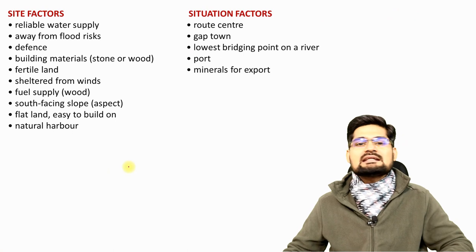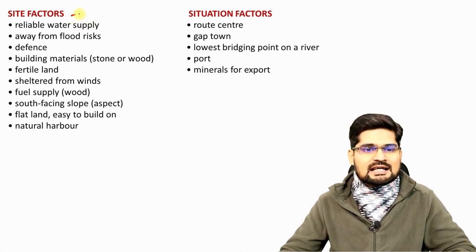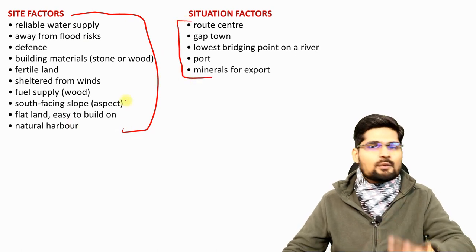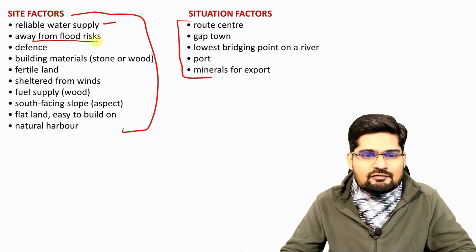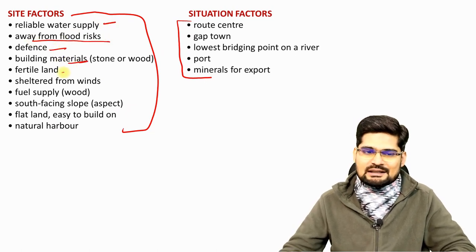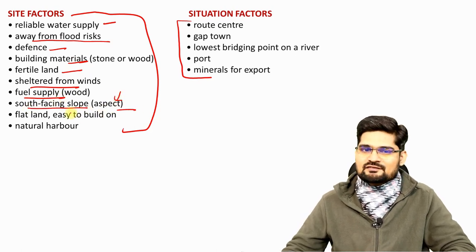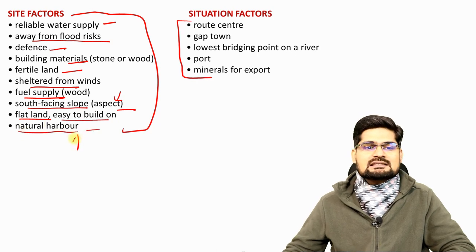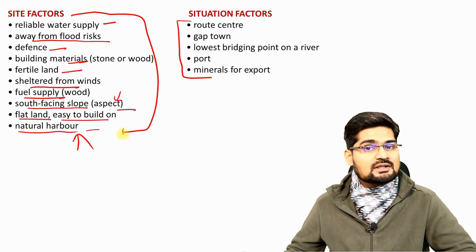Now let's elaborate site-based and situation-based factors. Site-based factors include reliable water supply, being away from flood risk, defense, building material, fertile land, shelter, fuel supply, aspect (south-facing or north-facing), flat land easy to build on, and natural harbor. You can pause the video and write these down.